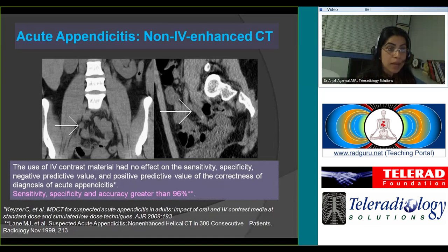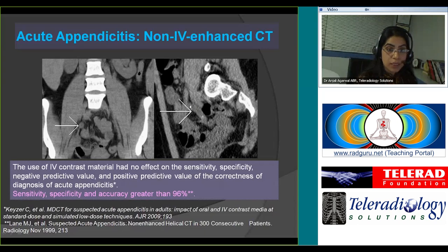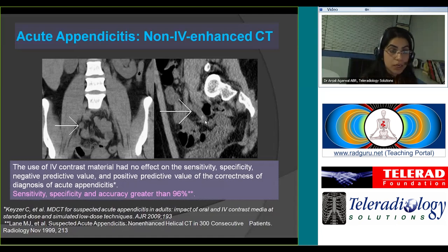These are examples of appendicitis diagnosed on CT urograms — non-contrast CTs. This particular thickened appendix shows some dirty fat around it. On the sagittal reformatted images, you can again see a thickened appendix with an appendicolith, suggesting acute appendicitis.